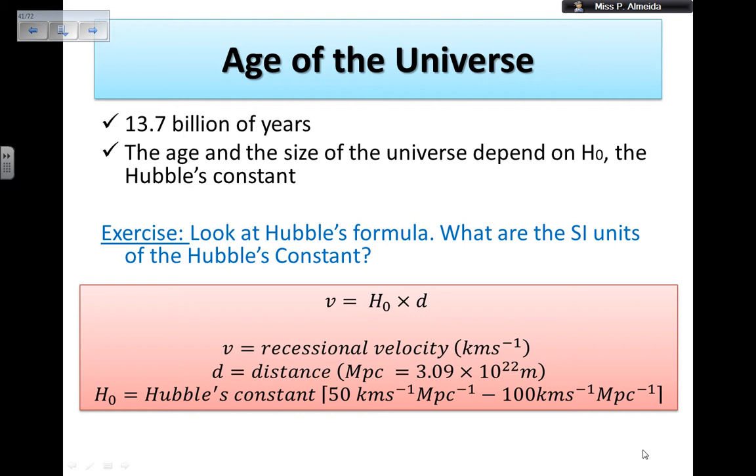To figure out how to calculate the age of the universe and get the formula, all you need to do is look at Hubble's formula and check what are the SI universal units for the Hubble constant. The formula says that the velocity that galaxies are receding from us in kilometers per second equals that constant times the distance. The distance comes in megaparsecs, where a megaparsec is 3.09 times 10 to the power of 22 meters.